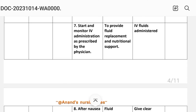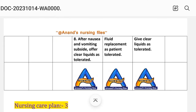Intervention number seven: start and monitor IV fluid administration as prescribed by the physician. Rationale: to provide fluid replacement and nutritional support. Implementation: IV fluid administered. Intervention number eight: after nausea and vomiting subside, offer clear liquids as tolerated.